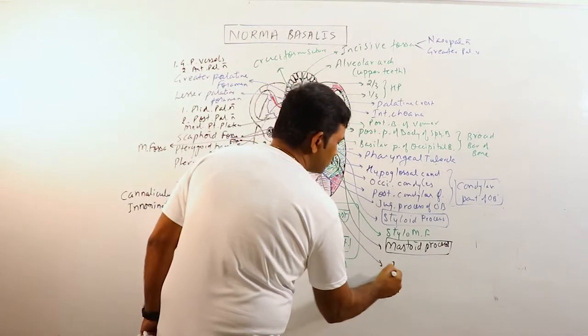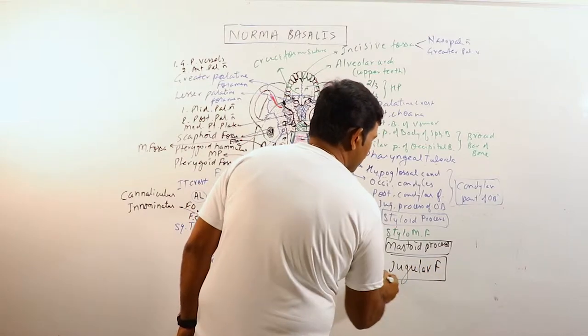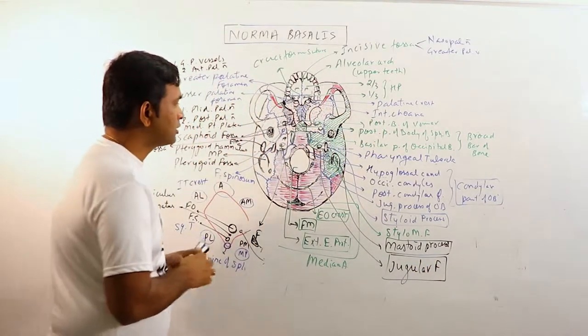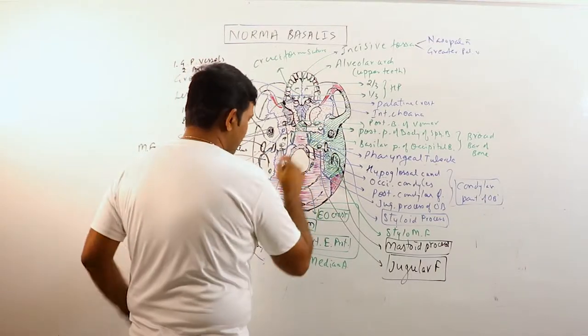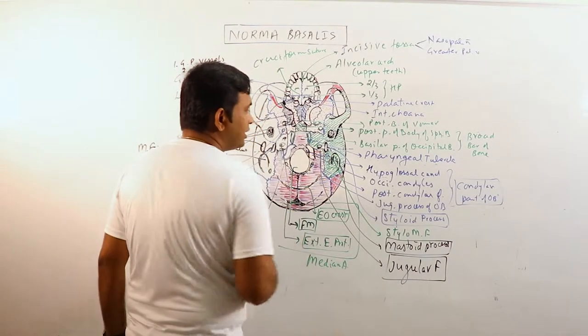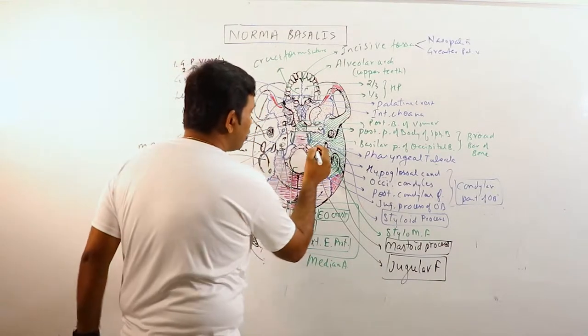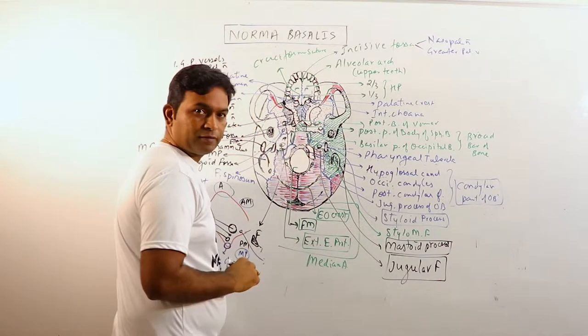This is jugular foramen. It is a very large foramen. It is elongated anteriorly and medially. In the medial part of this foramen there is jugular notch here.